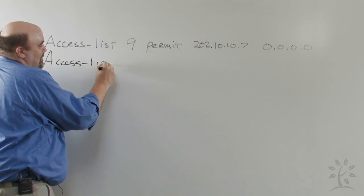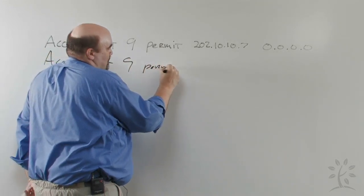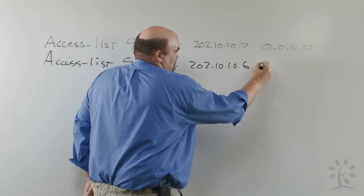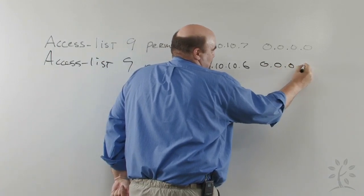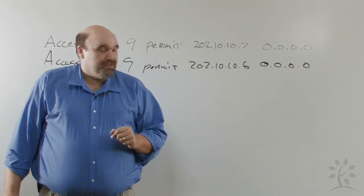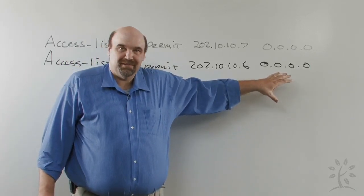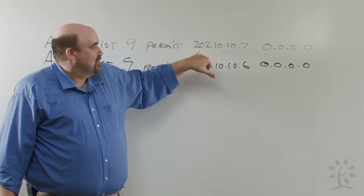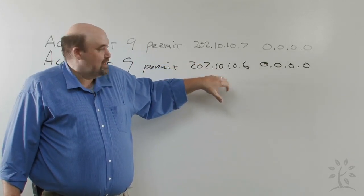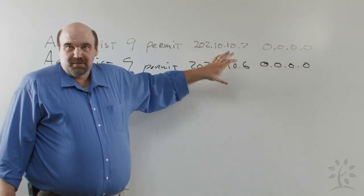So I'll write the command again. And this time, I'll use the same Wild Card Mask. I have two line entries. Now the Wild Card Mask can be adapted to simplify this whole expression. So I have .7 and then .6 in two separate lines.